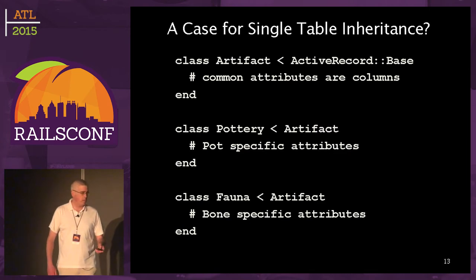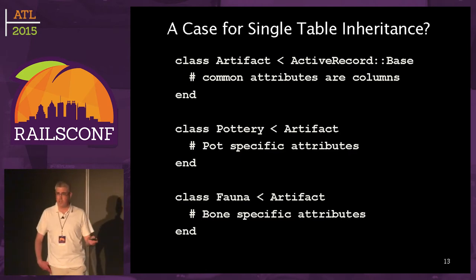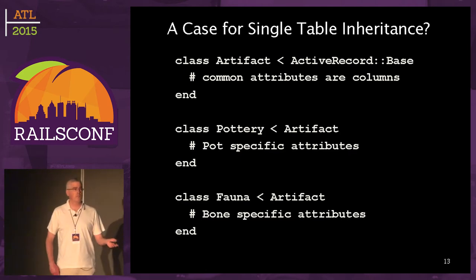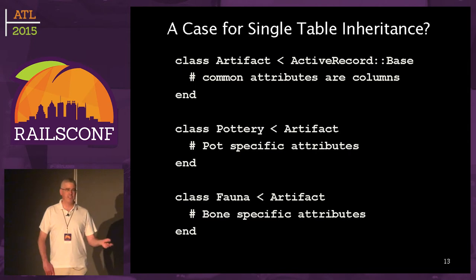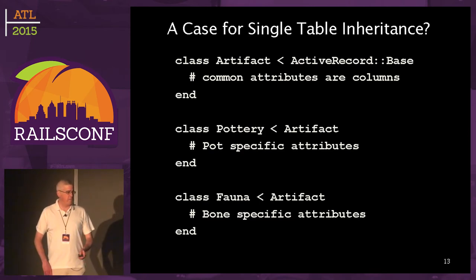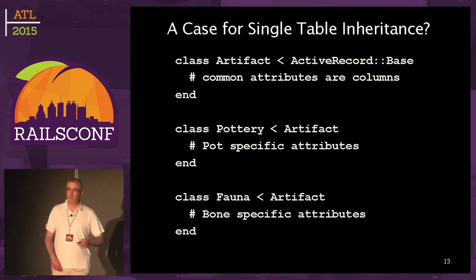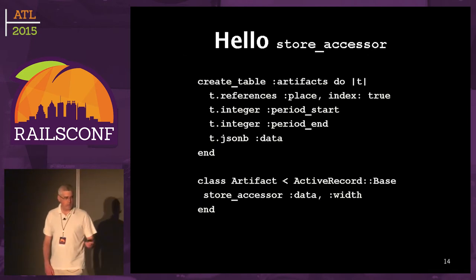I would have a common base class — we actually called it 'entity', but I was having trouble explaining what entities were, so I called it 'artifacts' here. They call them 'objects', but in Ruby that's taken, so we settled on 'entity'. Artifact makes it clear for a non-archaeologist. Pottery extends Artifact, and all of the specific attributes will be in the data column.